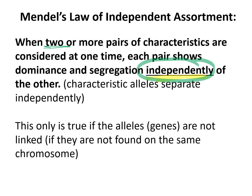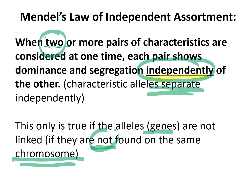This is only going to be true for alleles that are not on the same chromosome. If they are on the same chromosome, that chromosome is going to end up with both alleles in the same gamete, assuming no crossing over. So we are looking at only when they are not found on the same chromosome — whatever gene, whatever allele, whatever trait of a particular characteristic is going to be on one chromosome, and the second characteristic on a separate chromosome. Therefore they would not affect each other.